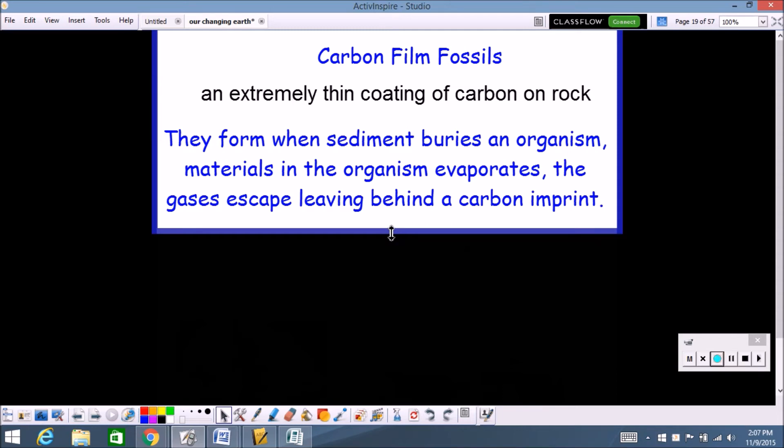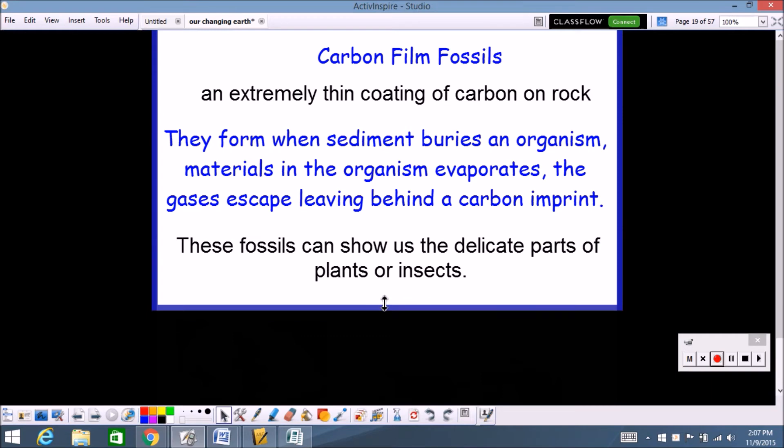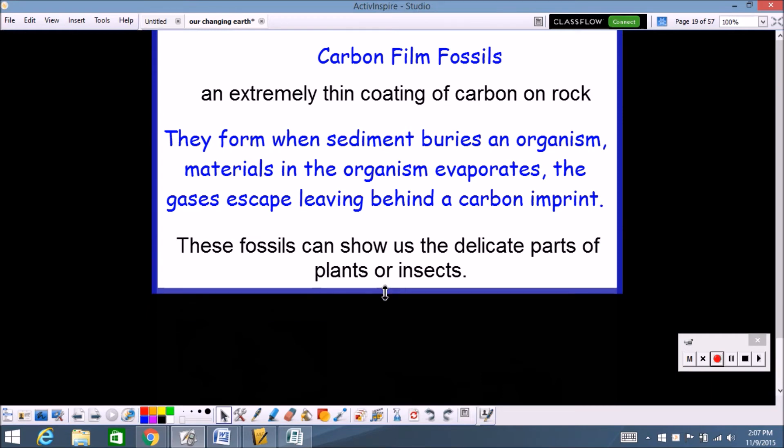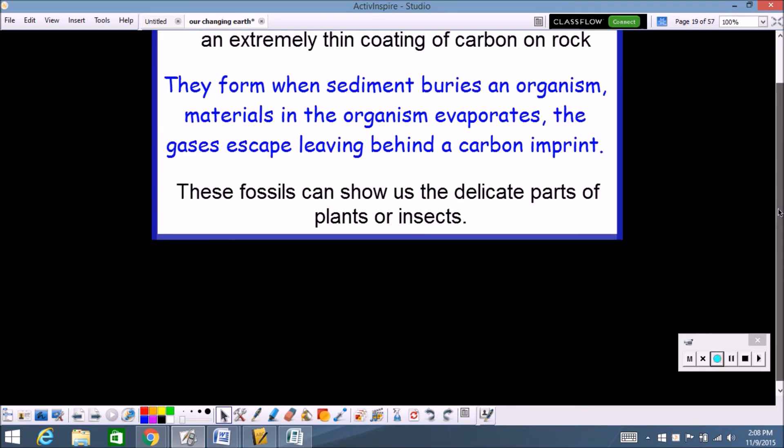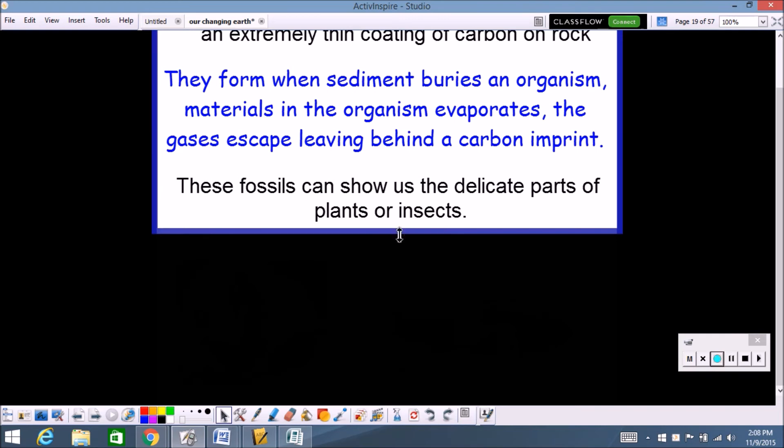The weird thing about these is you only get the delicate parts of plants and insects, which is very different because most of the time when you look at fossils you're just getting the hard parts. But with carbon film fossils you get those delicate parts, like the stem or the veins in a leaf, or like the wings and legs of an insect.